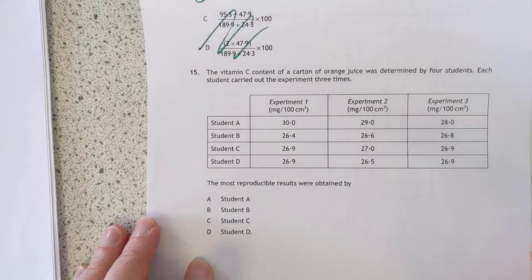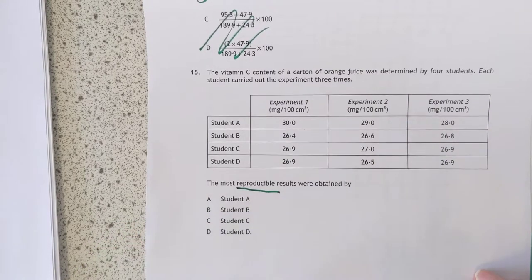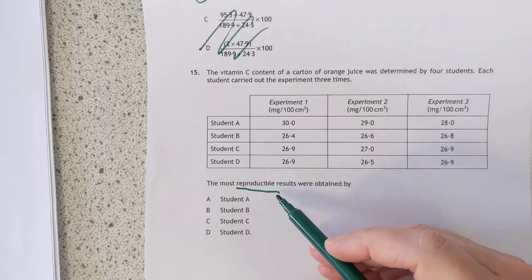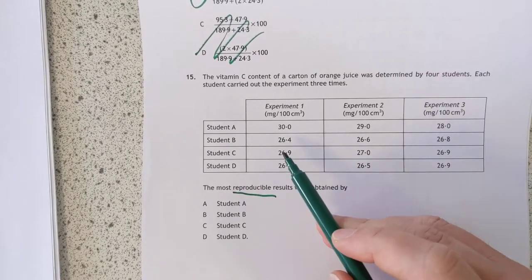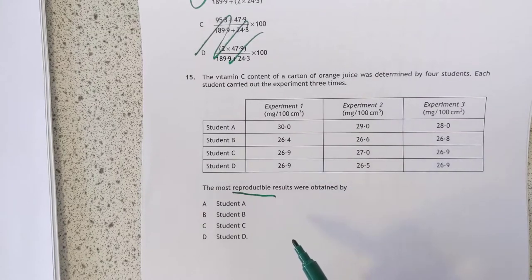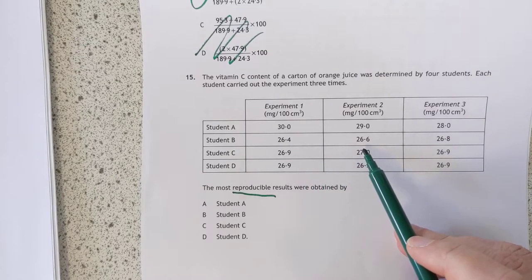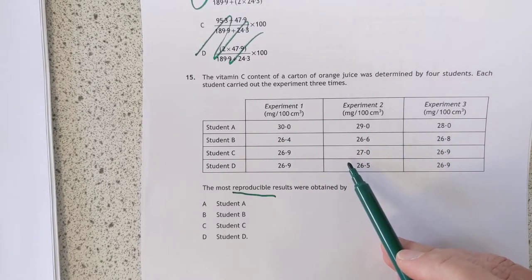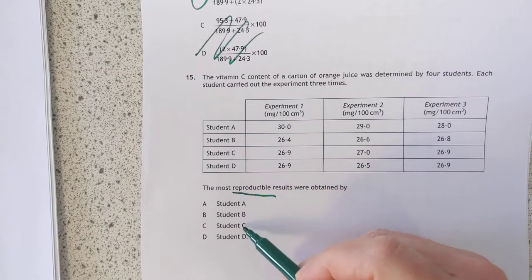Number 15. Vitamin C content was determined by four students three times. Reproducible. A definition of reproducible. I needed to bring my dartboard in. That's not the word they use, interestingly, at advanced higher. The word they use there is precision. But that's okay. Let's go with this. The most reproducible were produced by a student. We're looking for results that are similar to each other, basically. I'm dithering here. That's a centimeter cubed out. That's horrendous. That's 0.4. That's a range of 0.4. That's a range of 0.1. I'm going to go with that one. And that's a range of 0.4. Student C.